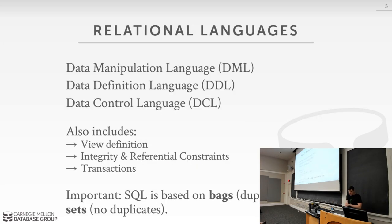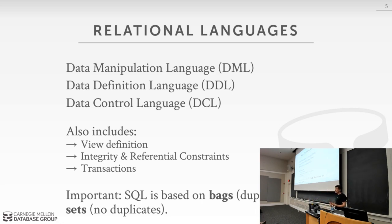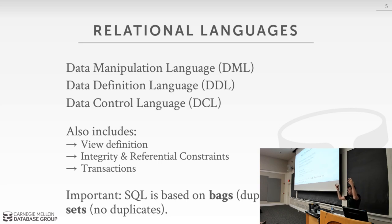SQL itself is technically not a single language — it's a collection of things. In particular it's a collection of DML, DDL, and DCL commands. DML — the Data Manipulation Language — covers commands like INSERT, UPDATE, DELETE, SELECT. DDL is the way you create tables and define schemas. DCL is the way you do security authorization, granting who's allowed to read what data. There's also a bunch of other things like how to define views, integrity constraints, referential constraints, and transactions — all part of the umbrella of SQL.